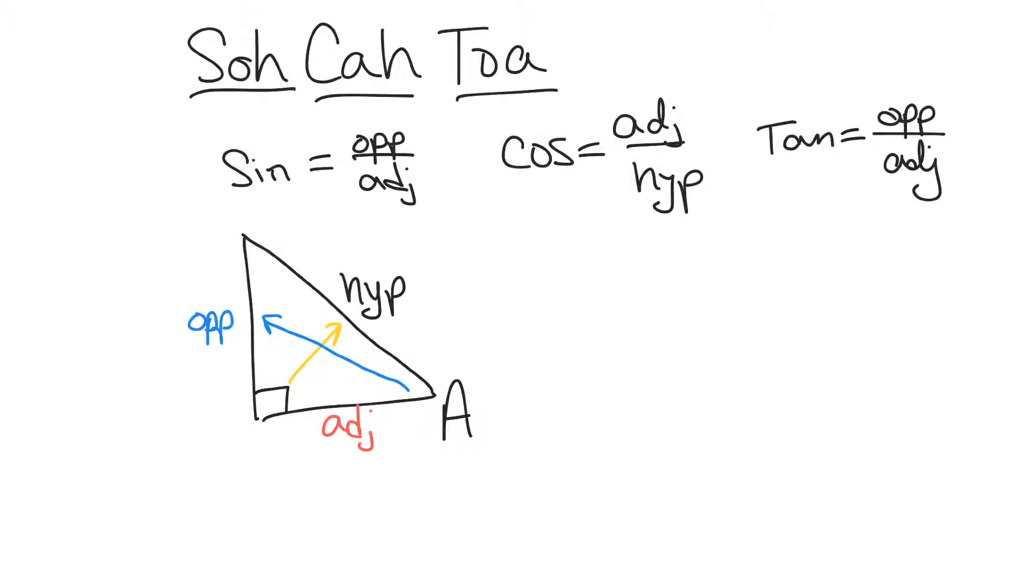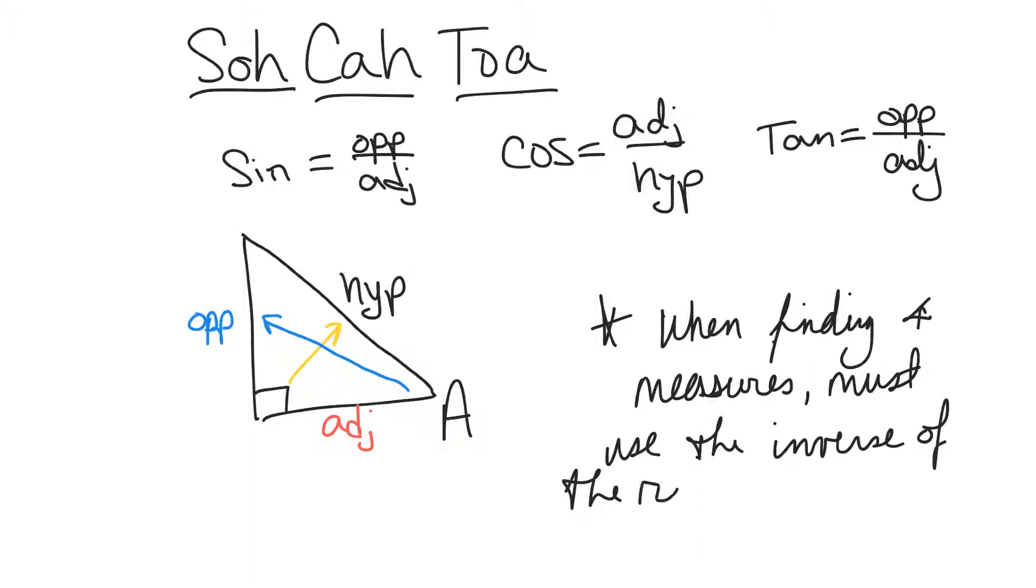Now remember, when we are solving for missing angle measures we must use the inverse function. Note: when finding angle measures, must use the inverse of the ratio. What do we mean? The inverse of sine, the inverse of cosine, and the inverse of tangent. So let's do a couple of practice problems.